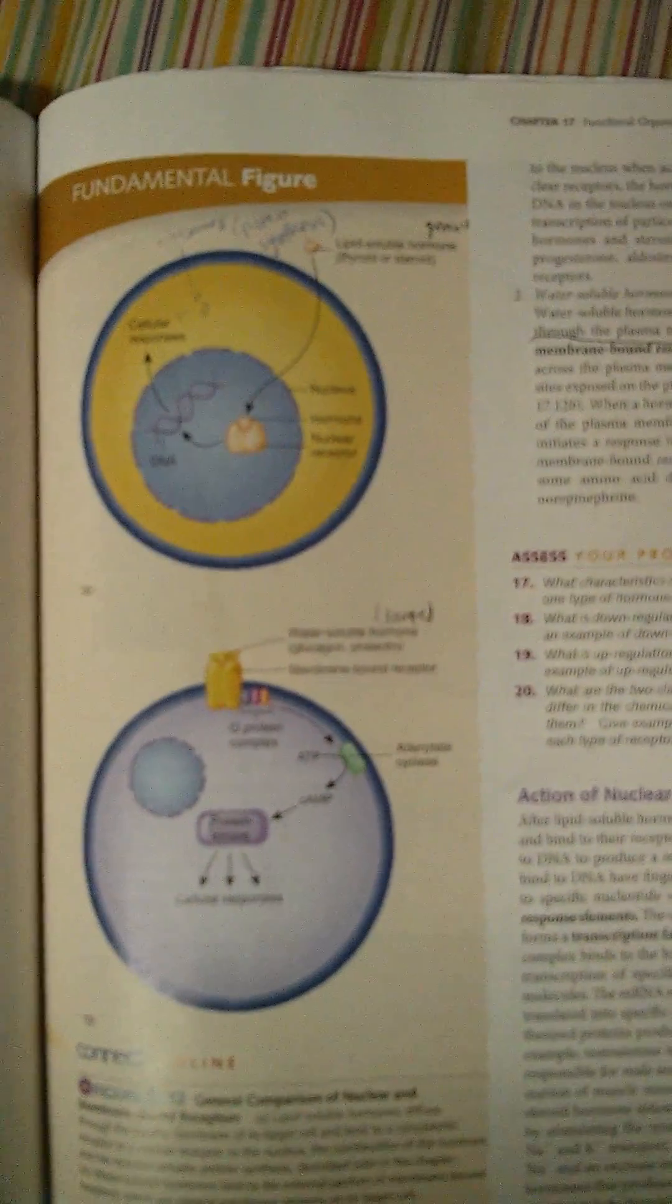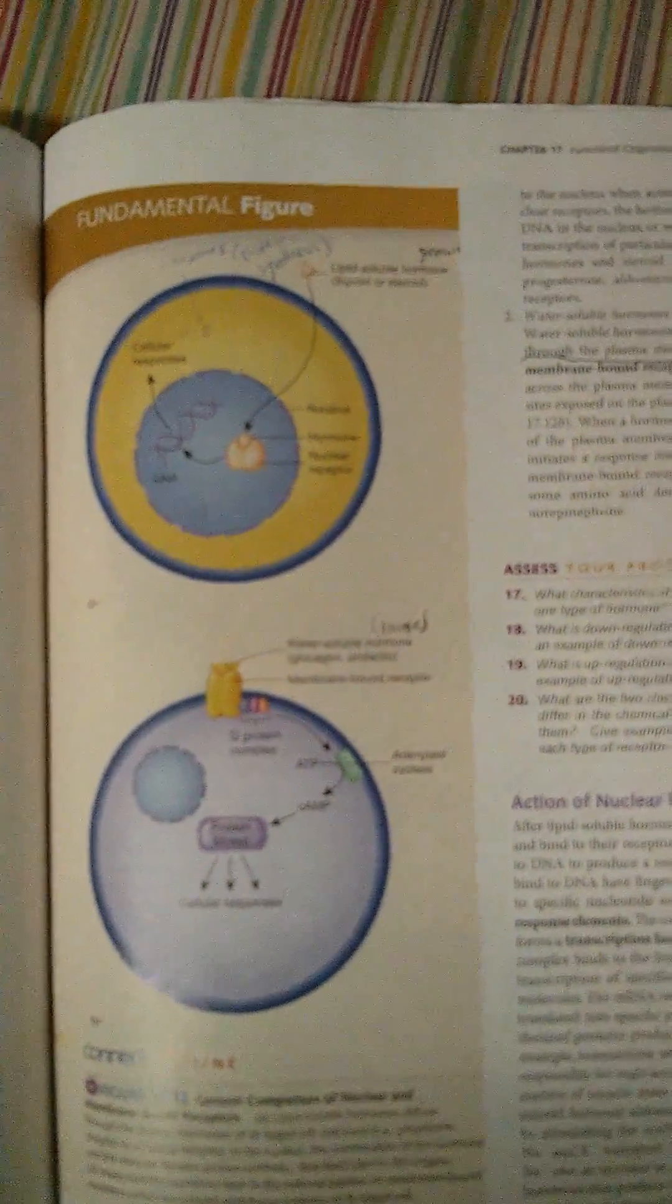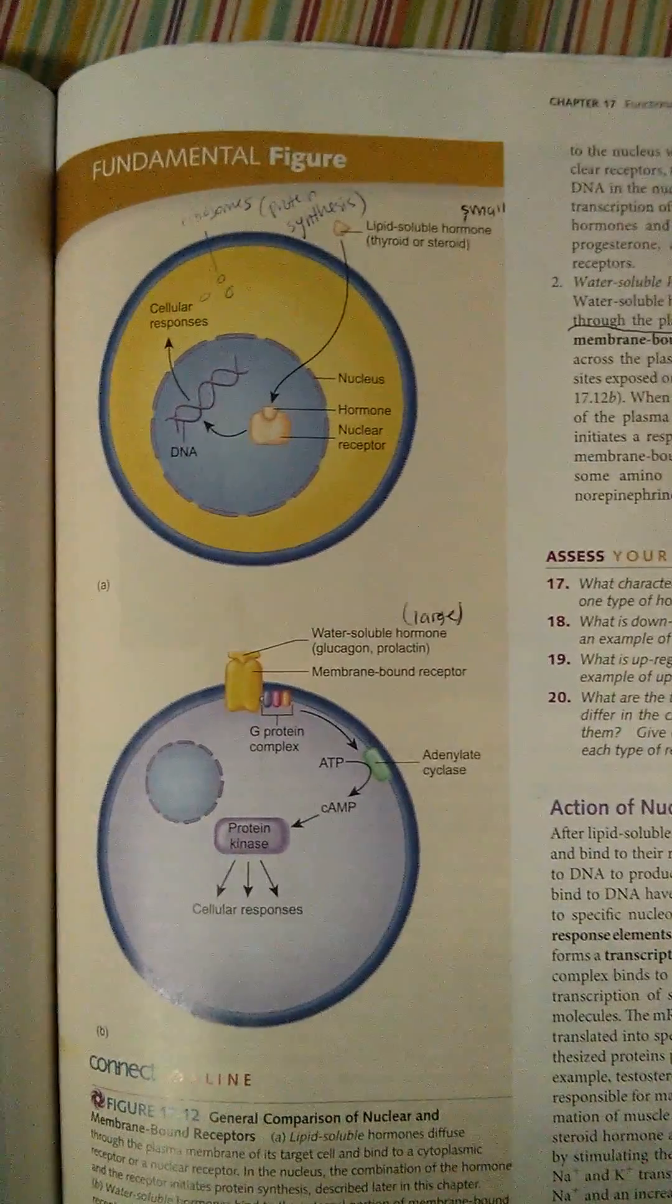Okay, so right now I'm going to be reading something from the book Anatomy and Physiology from Chapter 17, which is the functional organization of the endocrine system.